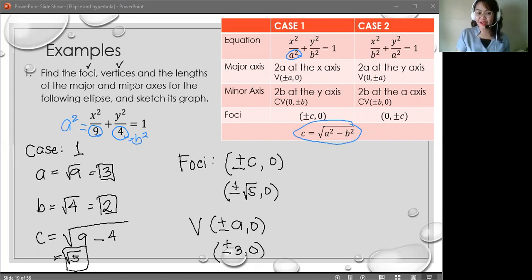For the lengths of the major and minor axis. For the major axis, we have 2a. So we just have to get the value for a and multiply it by 2. So we have 2 times 3, which is equal to 6 units.